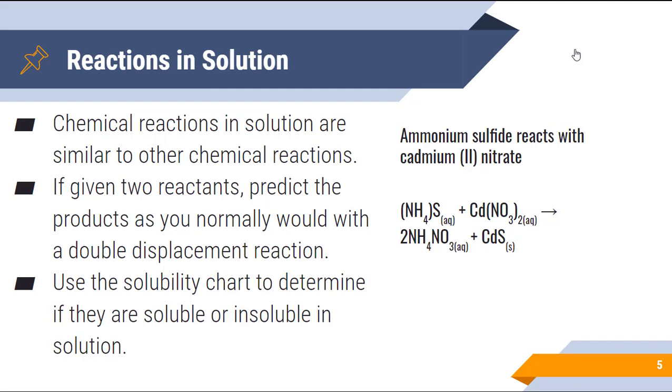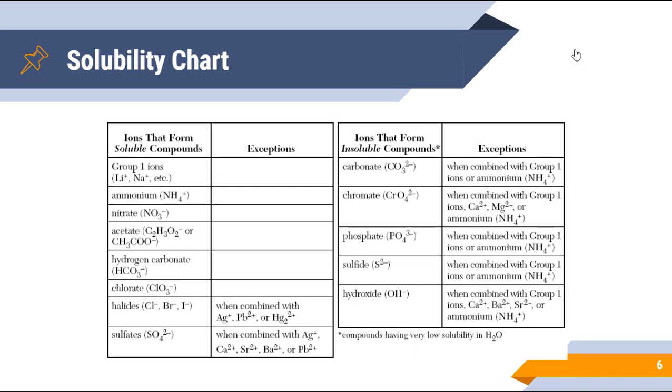When we show these as compounds, we have to keep in mind that when they are aqueous, they are dissolved into their individual ions. So it's really an NH4+ ion and an S2- ion that are present in solution, not the entire compound. And we determine this by looking at the solubility chart that is listed here.